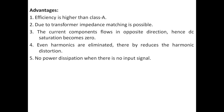As we saw in the total collector current equation, the DC components cancel each other, so there is no DC component at the output. Additionally, even harmonics are eliminated, leaving only odd harmonics, which results in reduced harmonic distortion in Class B push-pull amplifier.